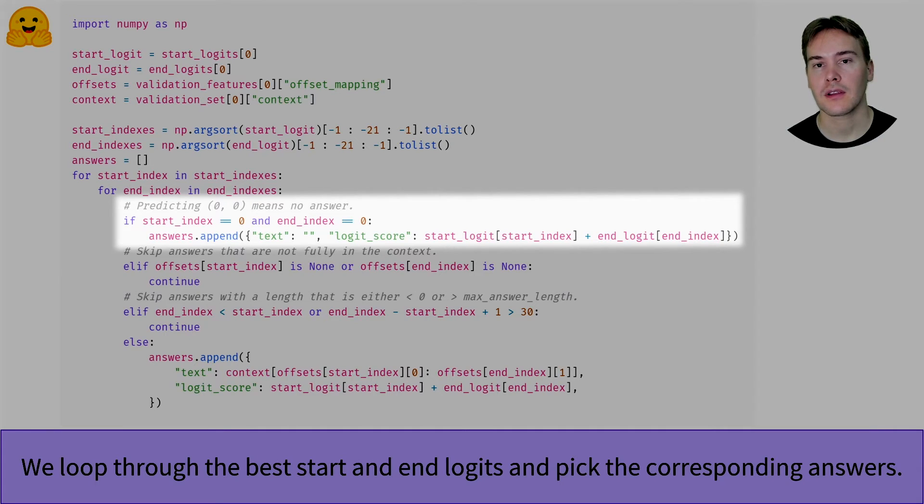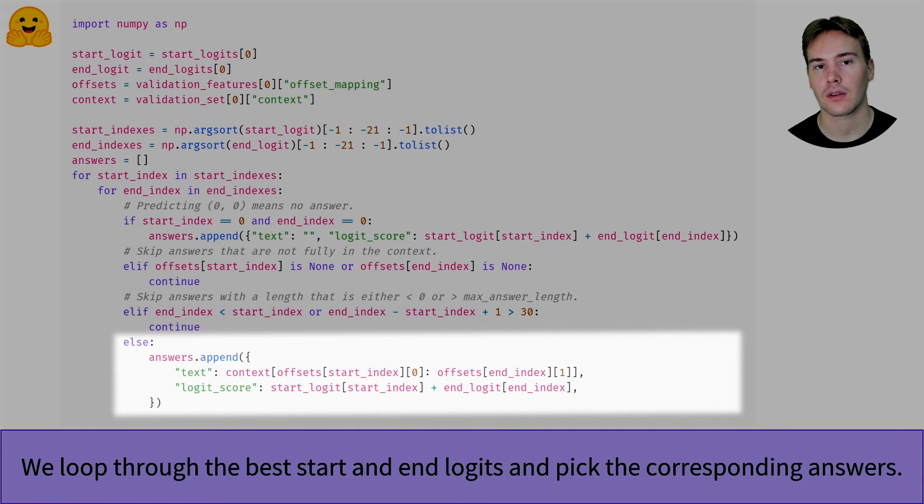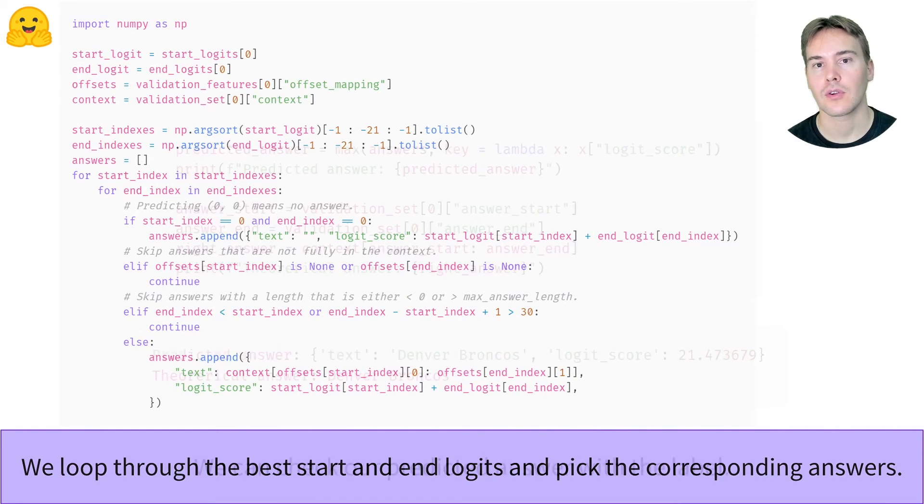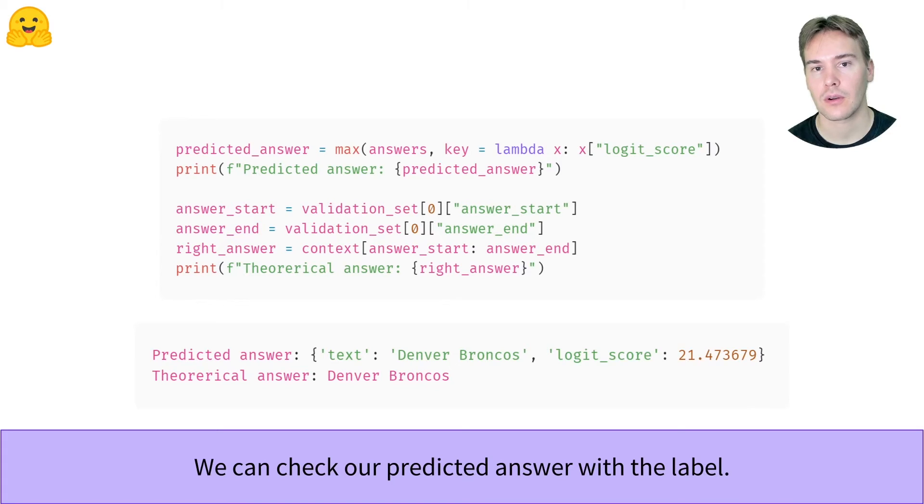As we saw in the preprocessing, the labels 0,0 correspond to no answer. Otherwise, we use the offset to get the answer inside the context. Let's have a look at the predicted answer for the first feature, which is the answer with the best score, or the best logit score since the softmax is an increasing function. The model got it right.